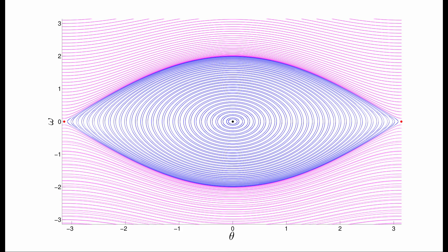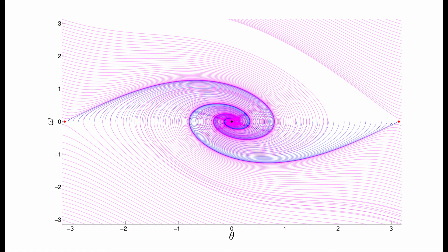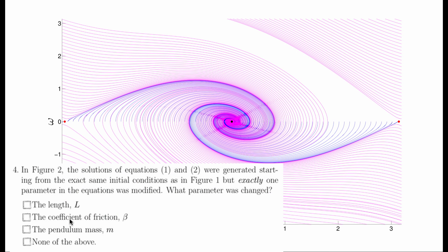With this in mind, if we were to regenerate this figure, but instead setting beta equal to 0.5, we would get the following state-space portrait. This answers question 4. The parameter we have to change is the coefficient of friction, or beta.